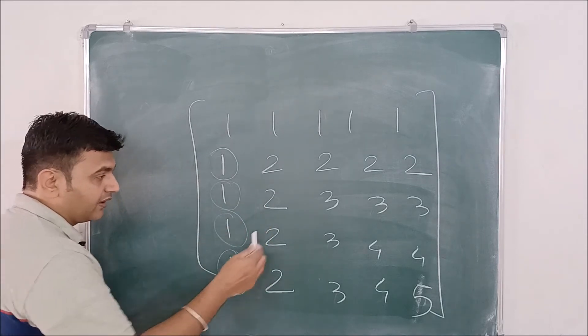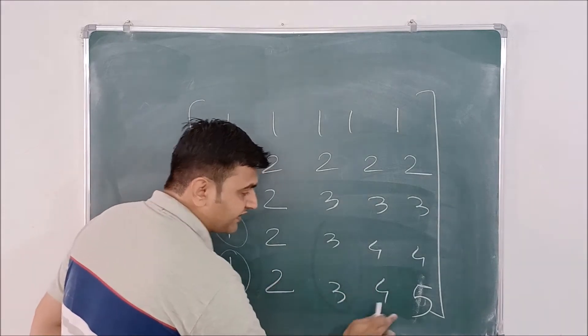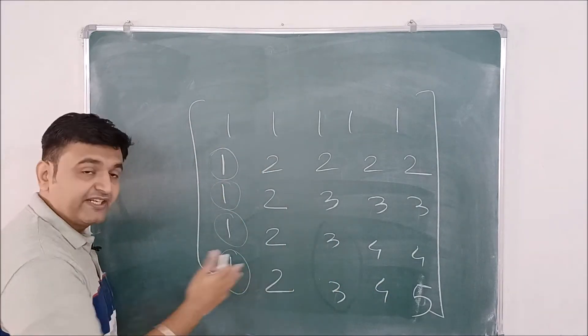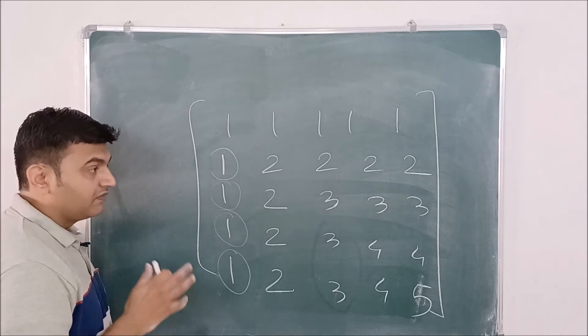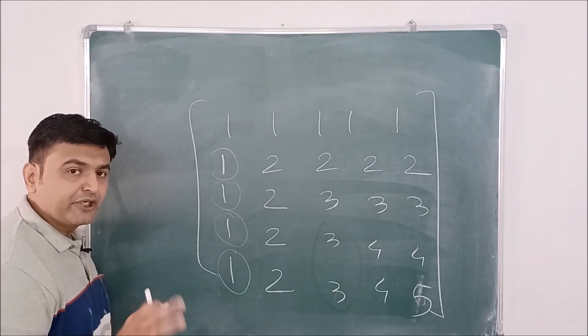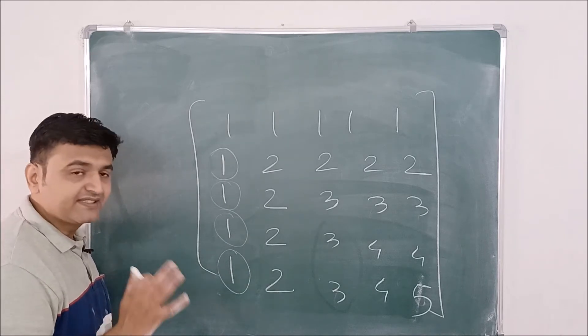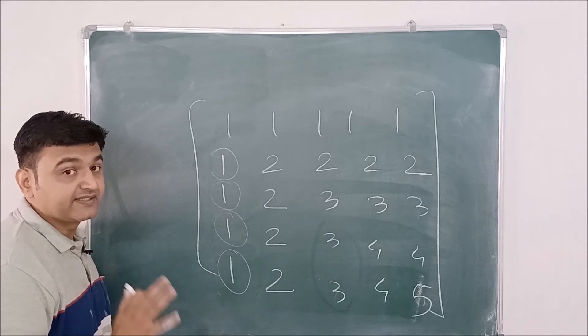And again, then you have to make this entry zero, this entry zero. So you have to do around seven, eight operations, which is fine in exam, but in competitive exam, you have to think a little bit smartly. You cannot afford to waste time.